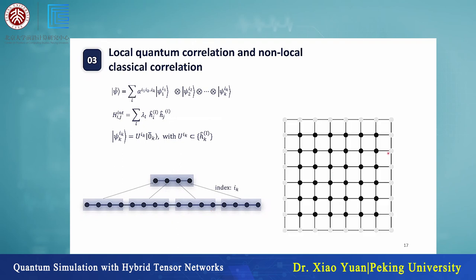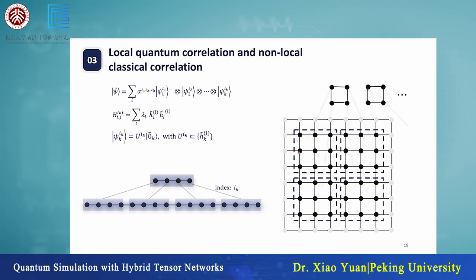In the 2D case, we can do it similarly. We divide the lattice into different subsystems, then use one node to represent each subsystem. This node corresponds to the classical index, and we use the classical tensor to represent the interaction between subsystems. In practice, we can consider even larger lattices, with further subsystems and further correlations.